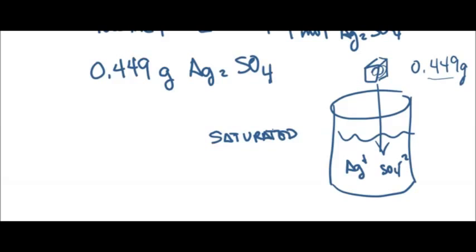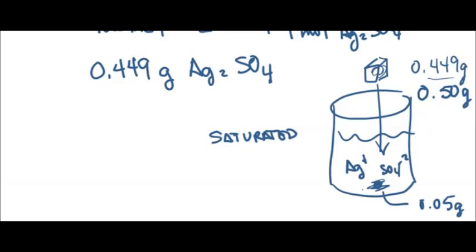If instead we added 0.5 grams of silver sulfate, 0.449 grams would dissociate and we'd have about 0.05 grams of silver sulfate crystals sitting on the bottom of the beaker. Once saturated, the solution will no longer allow any more dissociation to take place. It's a very weak salt, and once the solution is saturated, it cannot dissolve any more.